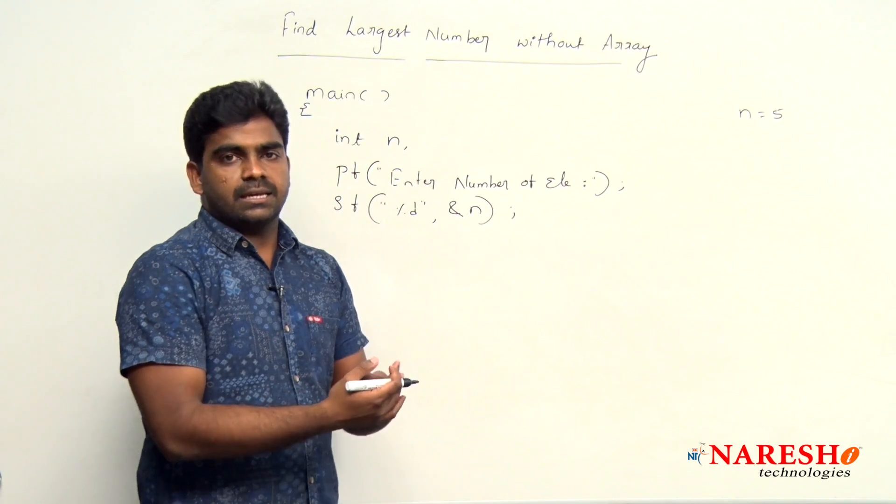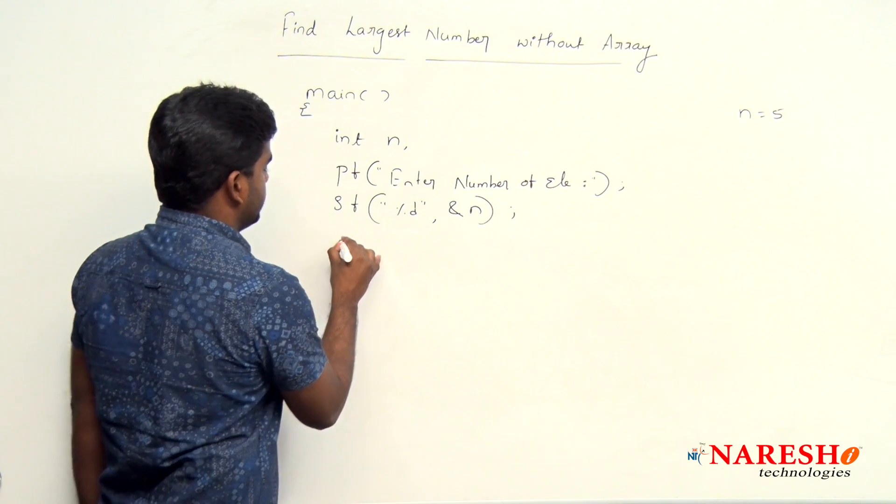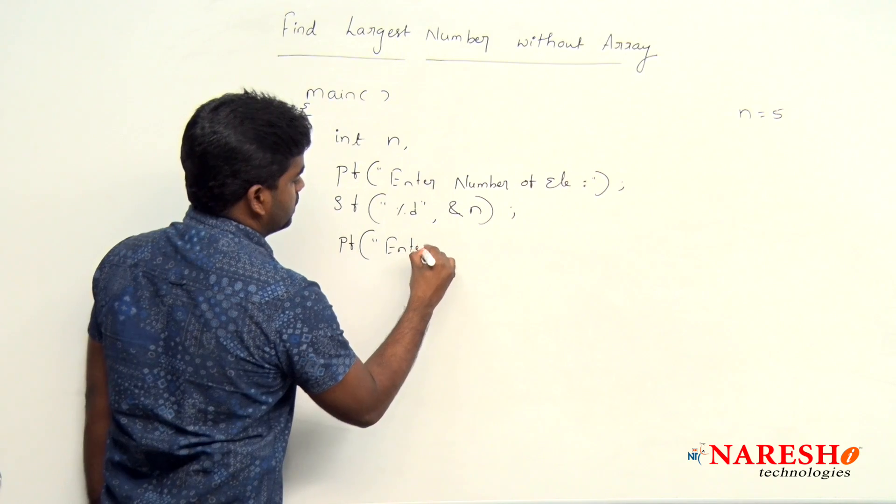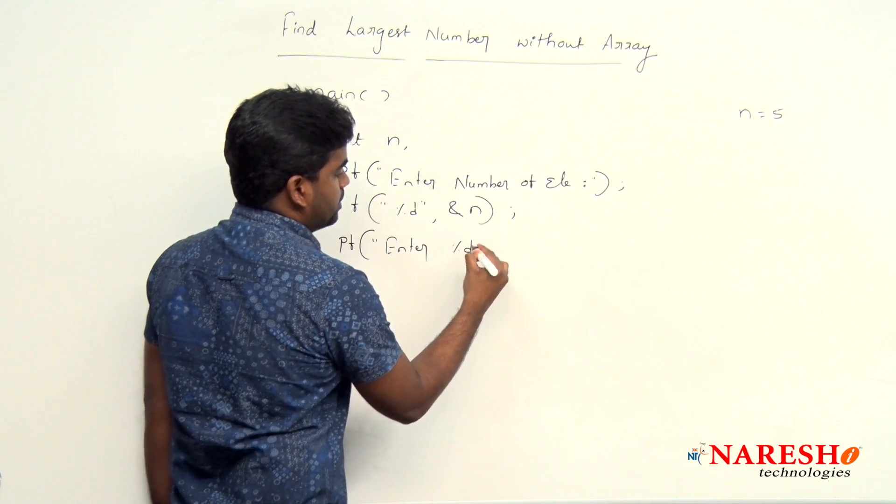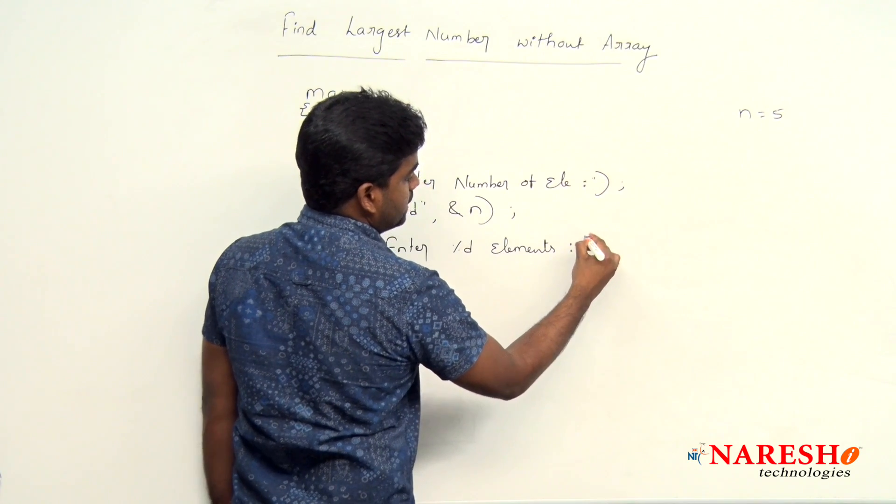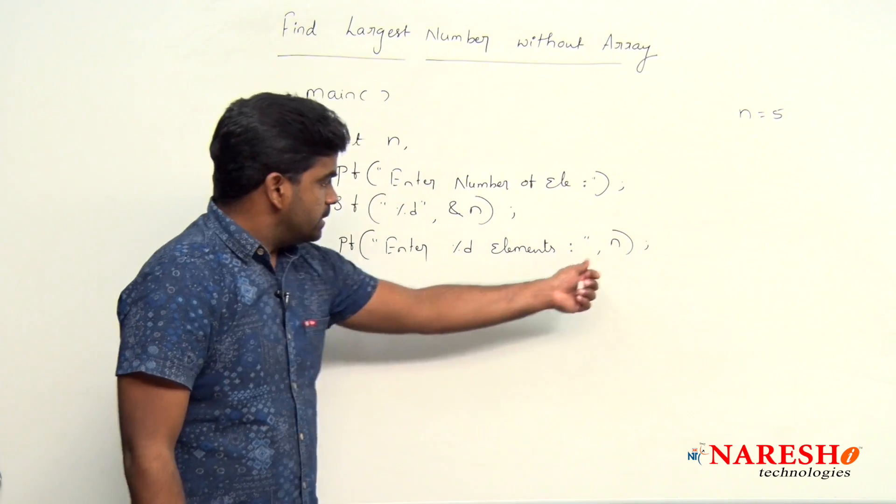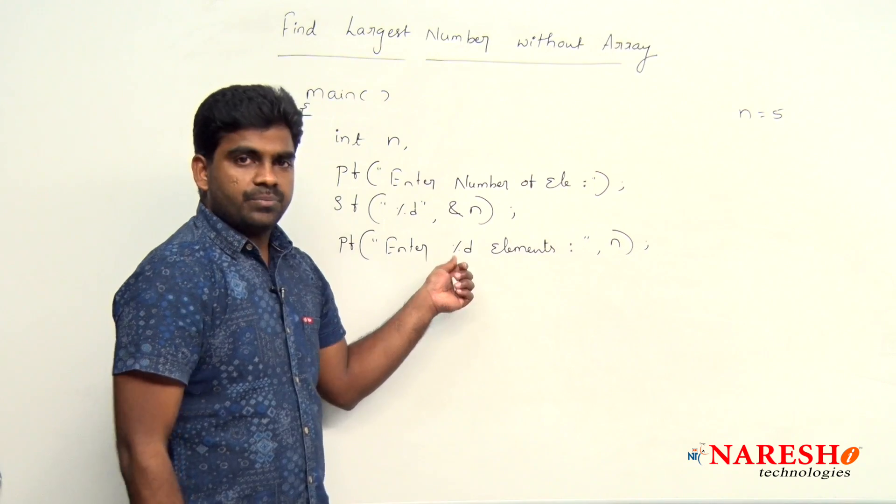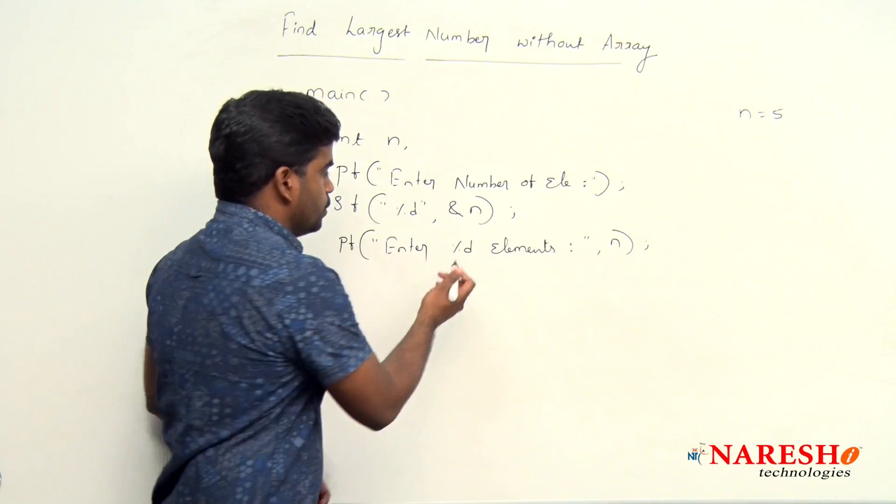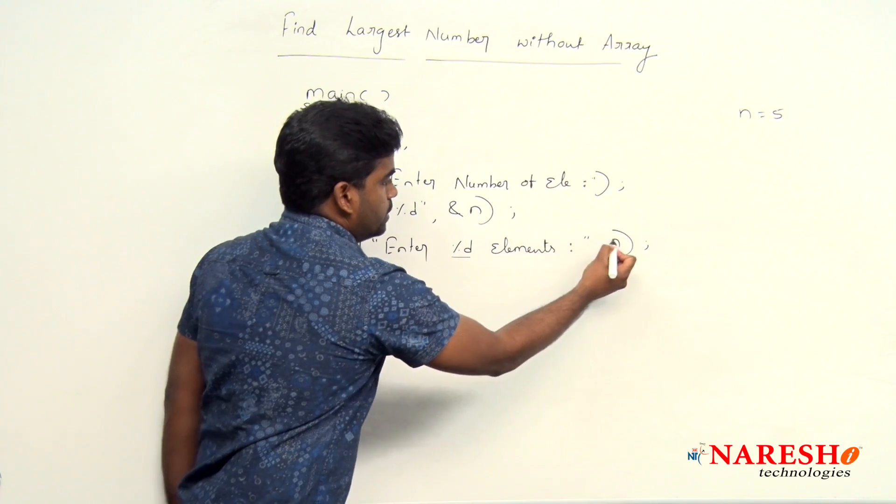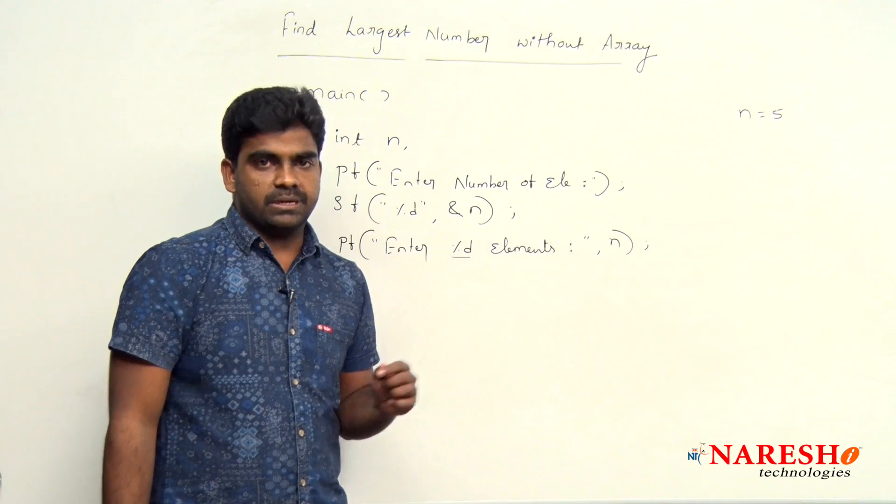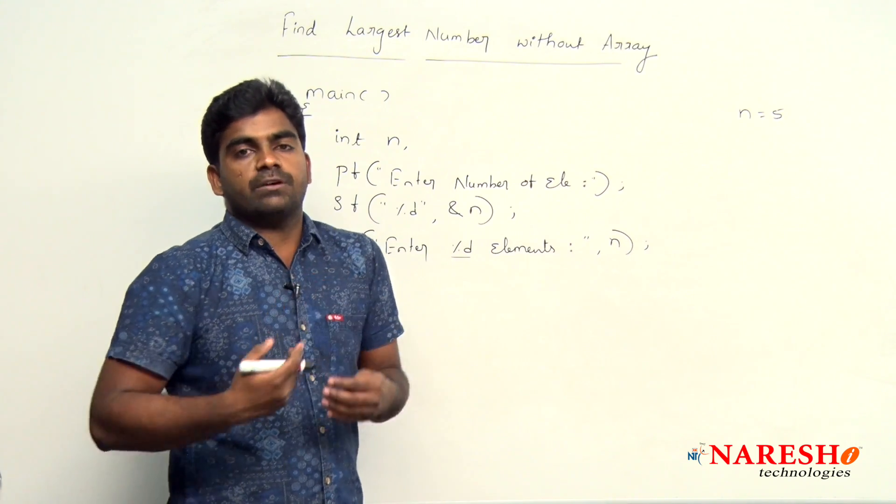We are asking enter all the 5 elements. Printf, enter n elements. n means percentage d, here n we are writing. That n value will display here because n value is not constant, it will change from time to time. So what is the integer value you want to display, that variable you are specifying here. So the message is clear, enter n elements. We are reading one by one.